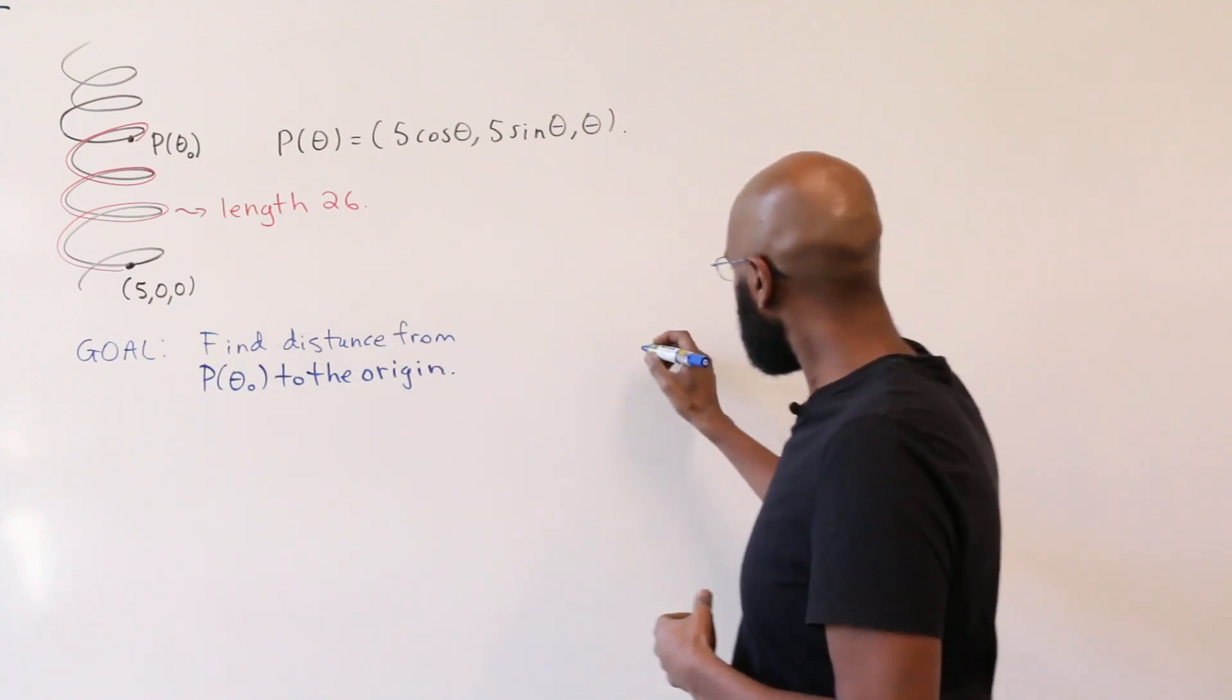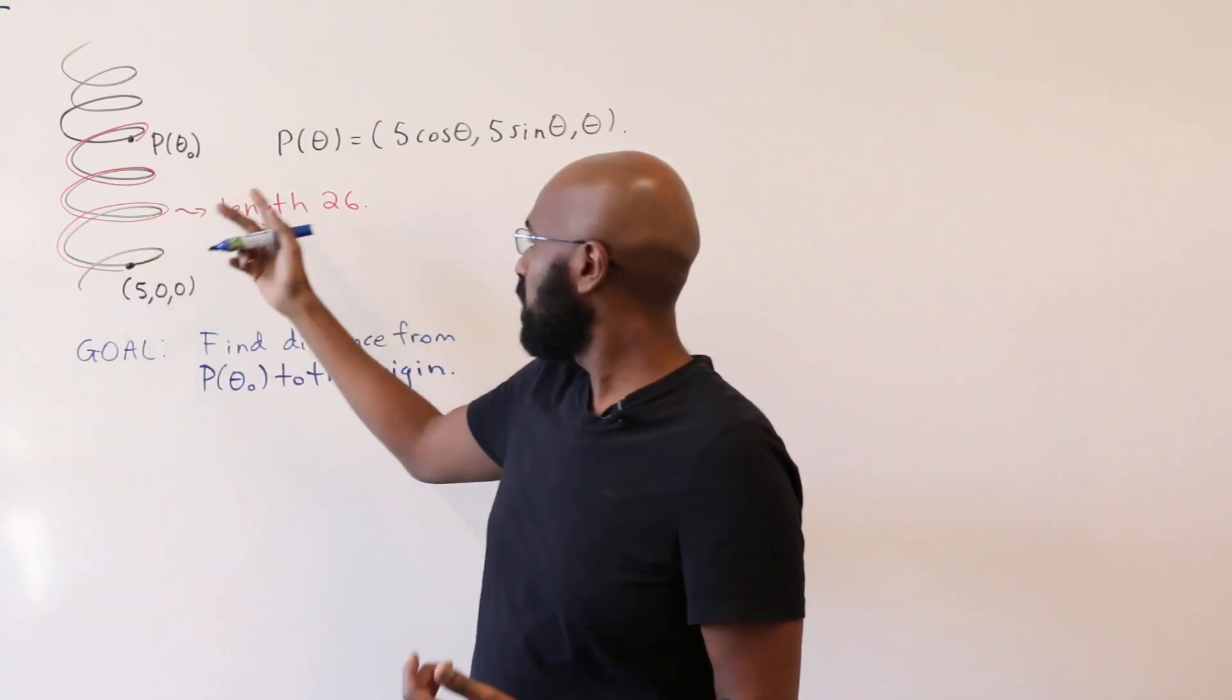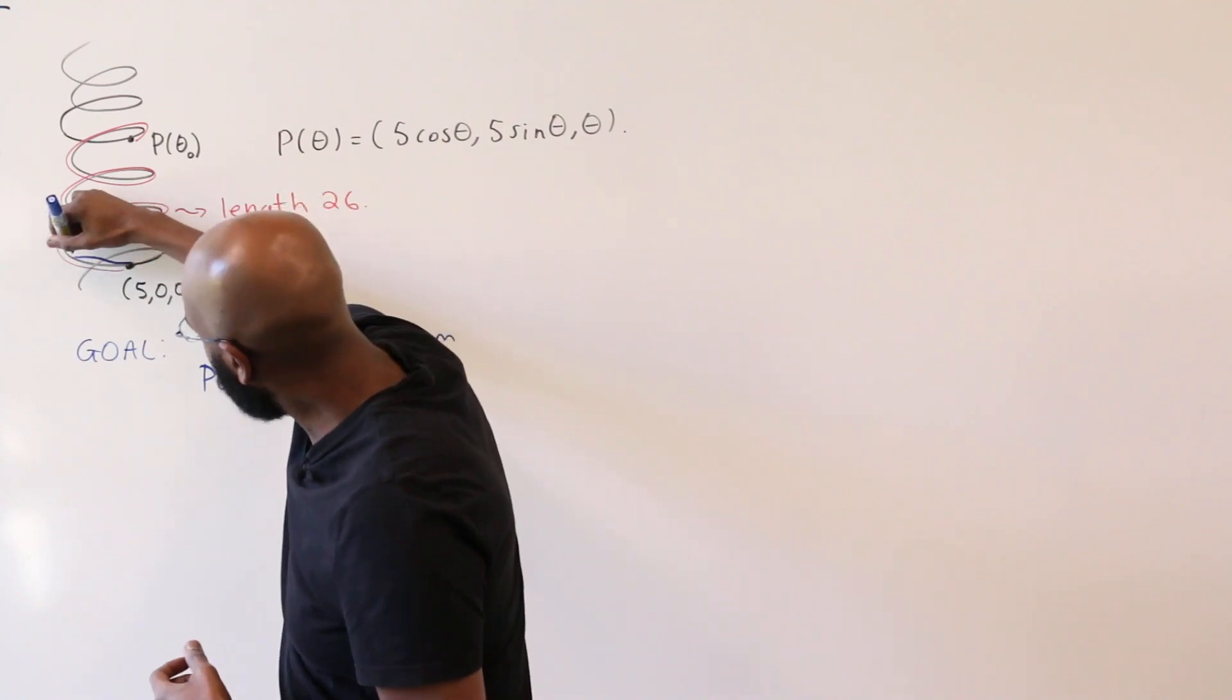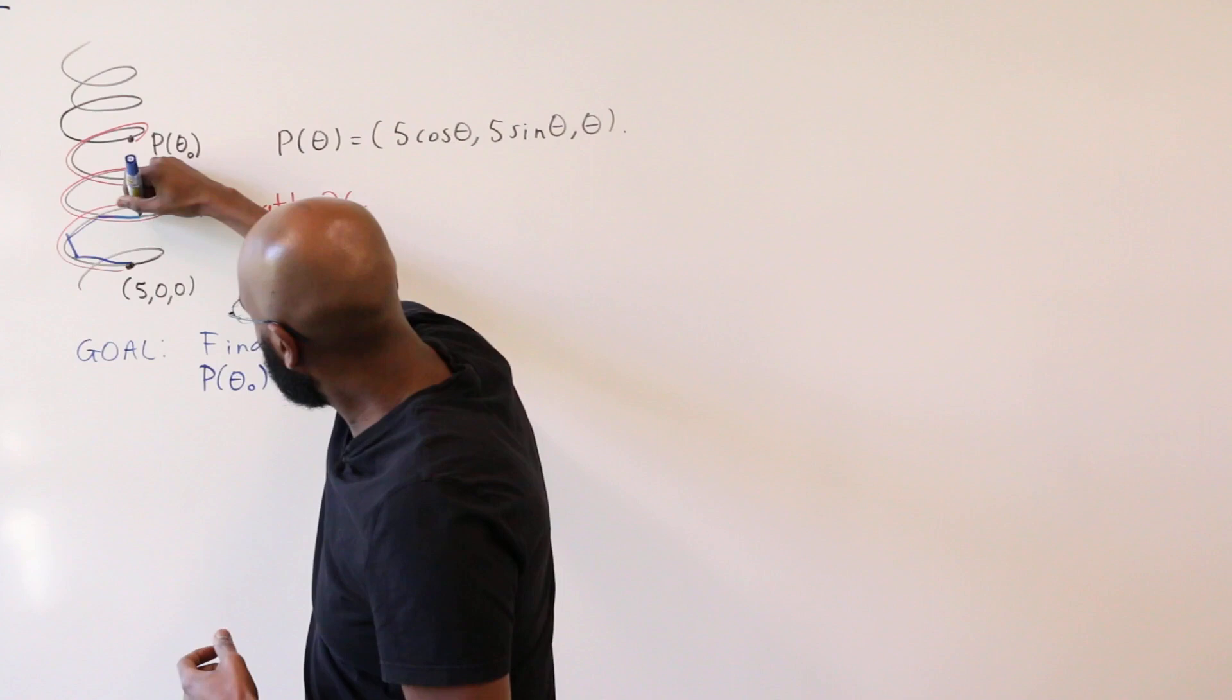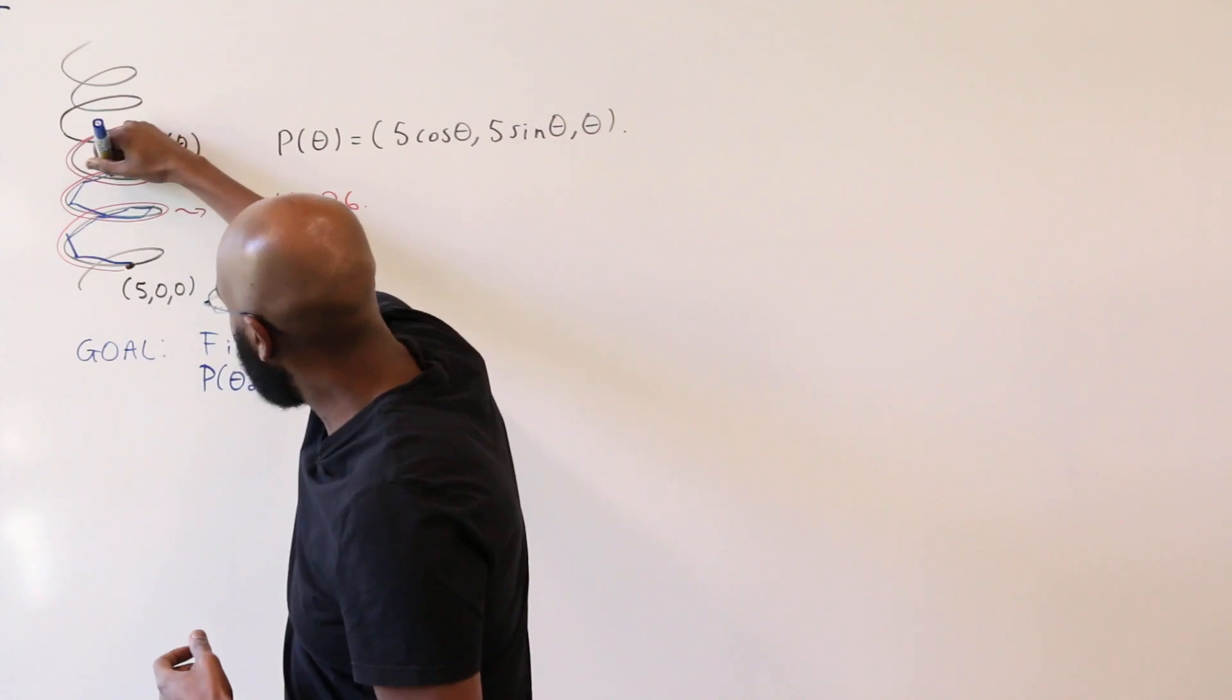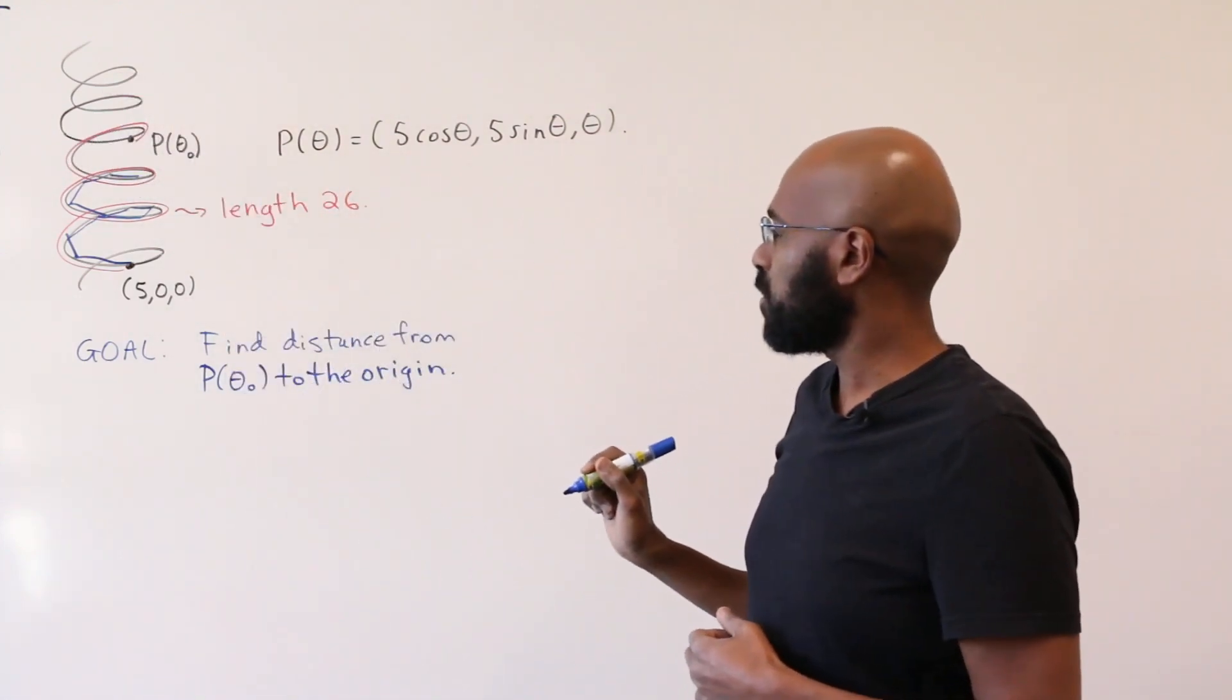So imagine we have this helix and we want to approximate the length. Thinking about the fundamentals of what we do in calculus, that would involve separating the arc into line segments that approximate the length of the curve, and then adding up all of those line segments as we keep doing so along the curve.